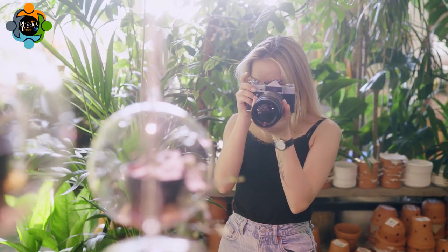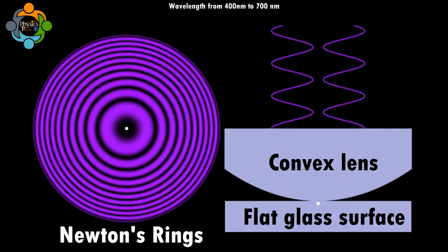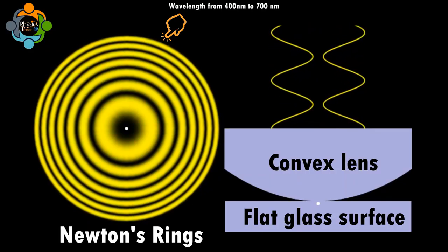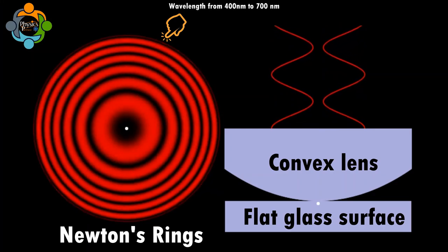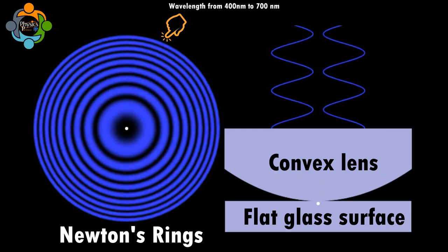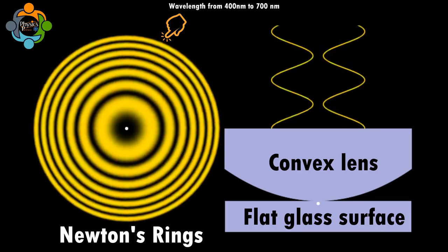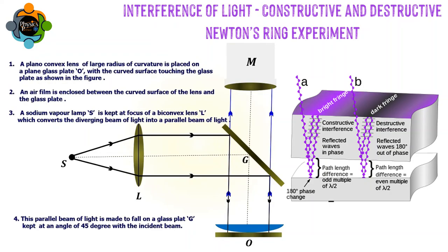quickly grasp what exactly Newton's rings are. When a convex lens is placed on a flat glass surface, a series of concentric colored rings appear. These intricate patterns of light and dark are known as Newton's rings. But what causes